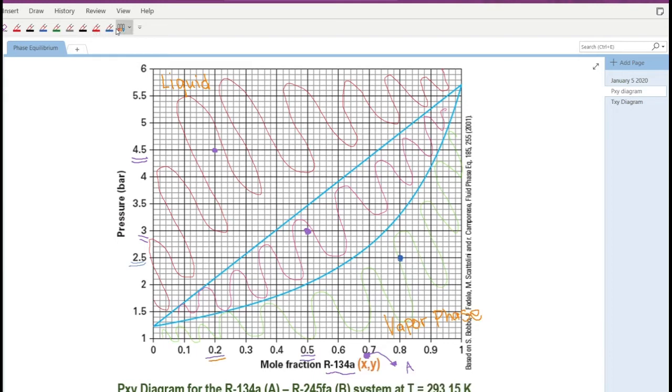So I will write here VL mixture. In this area is the liquid part, this area is the vapor phase, and then this area in between the curves is the vapor-liquid mixture. So I hope it's understood.